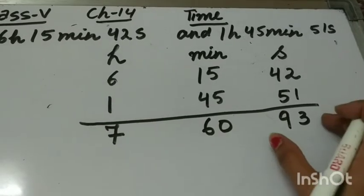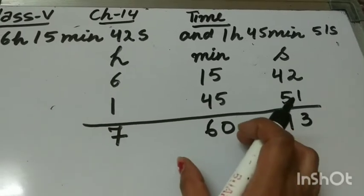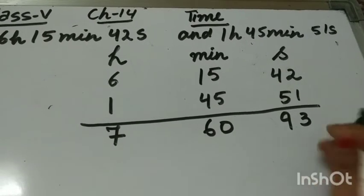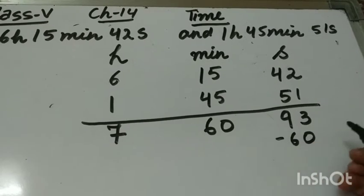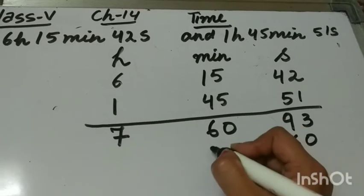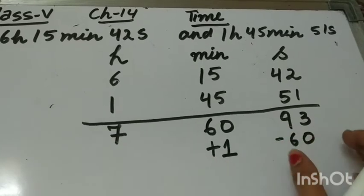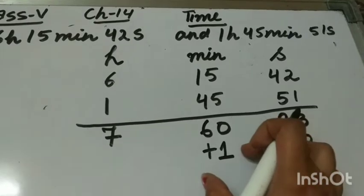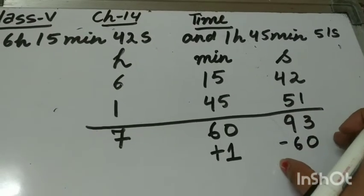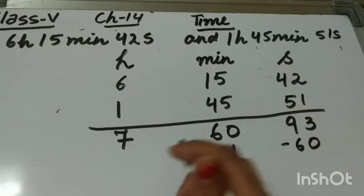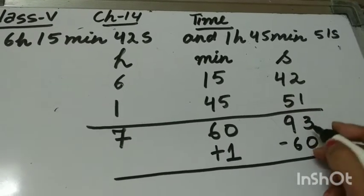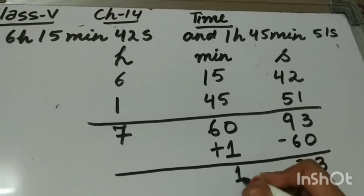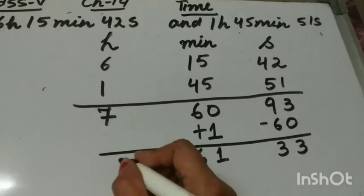Now first we will convert the seconds into minutes, because here the seconds are more than 60. We will subtract 60 from the seconds and add 1 to the minutes, because we are converting 60 seconds into 1 minute. So we subtract 60 from the seconds part and add 1 to the minutes part. It will become 33 seconds, and 61 minutes and 7 hours.